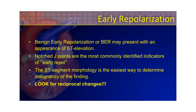Early repolarization. Benign early repolarization, or BER, may be present with an appearance of ST elevation. And this is the most difficult of all the different types of STE Mimics — the most difficult to determine its presence versus an anterior wall MI, and you're going to see why.